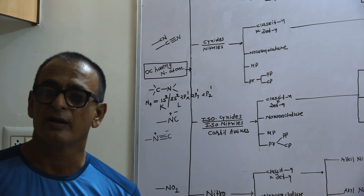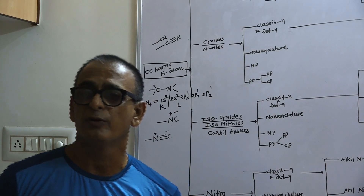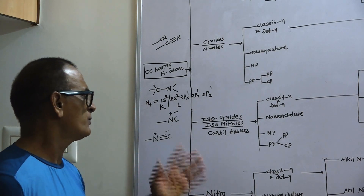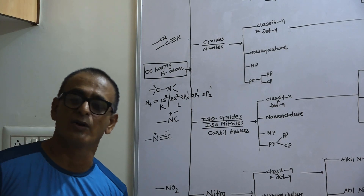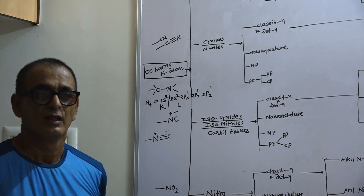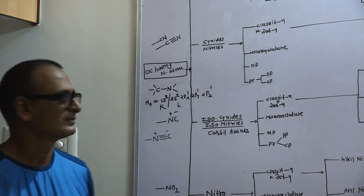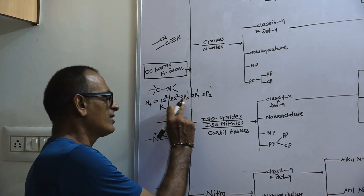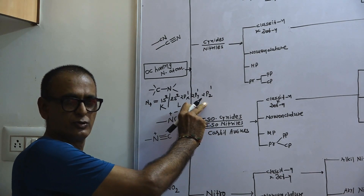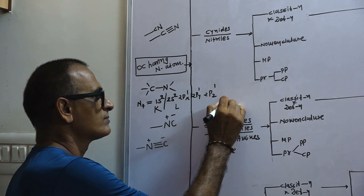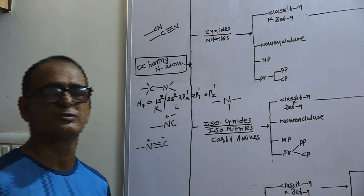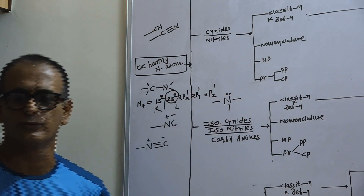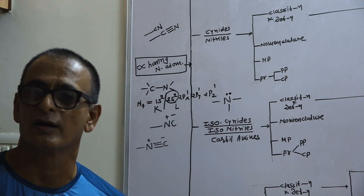If you want to find out the bonding capacity of any element, you should find out the total number of orbitals in the outermost orbit. In the case of nitrogen, there are four orbitals present. The actual bonding capacity is determined by how many unpaired electrons are present in the outermost orbit. Three unpaired electrons are present, so nitrogen can form three bonds. These three unpaired electrons are responsible for covalent bond formation. The 2s2 paired electrons are not responsible for bond formation.